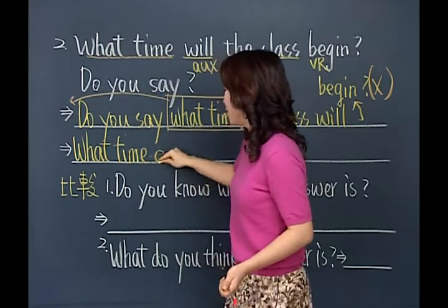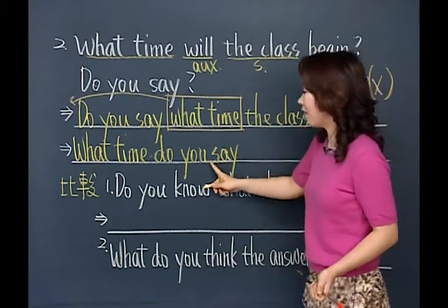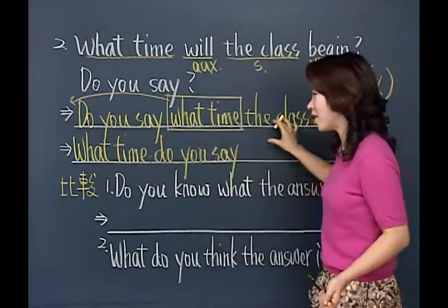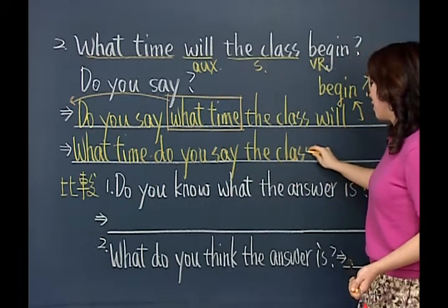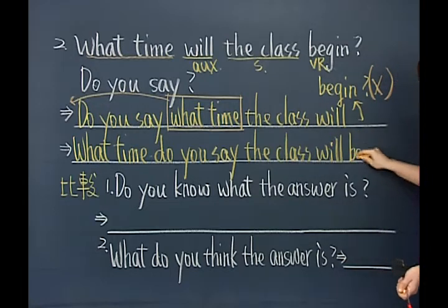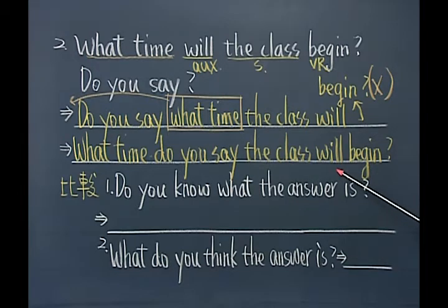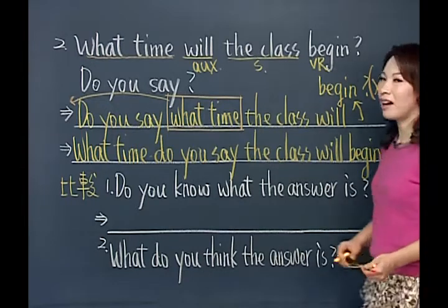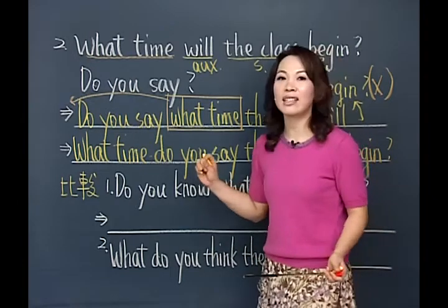所以这句话才是对的：What time do you say the class will begin？你说这堂课是几点钟开始的呢？好，你可以回答：I think it will begin at 8（或at 9, at 10），总而言之你看到what time开头就一定是回答时间。